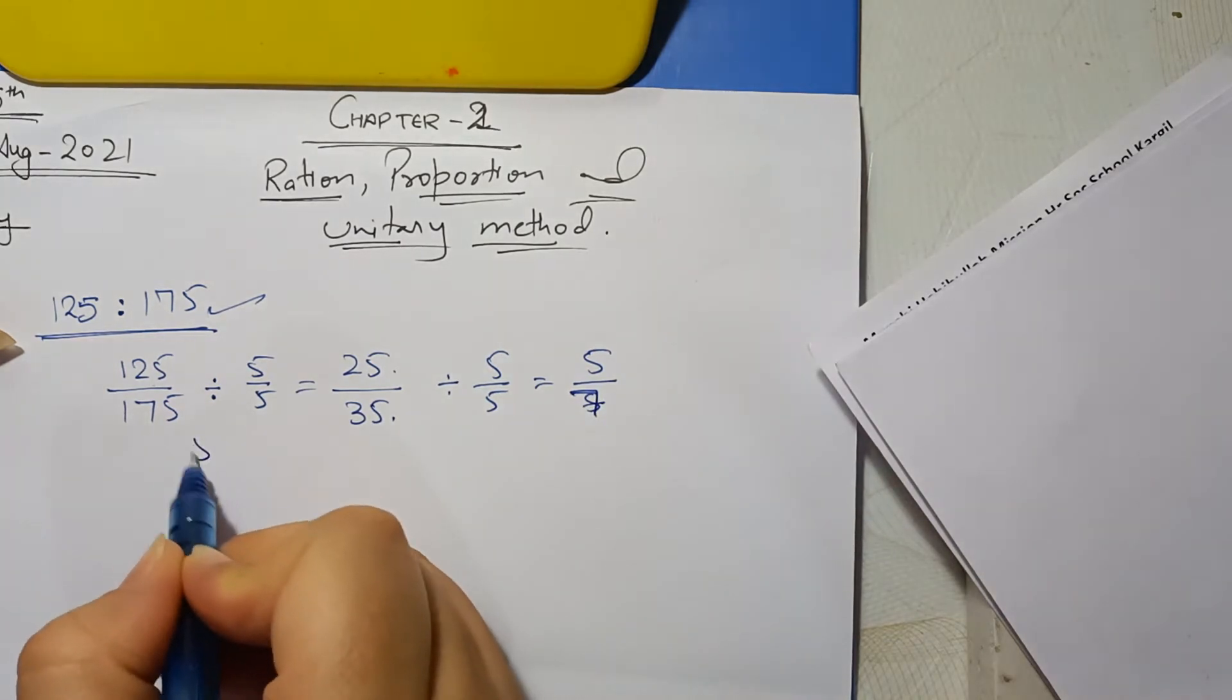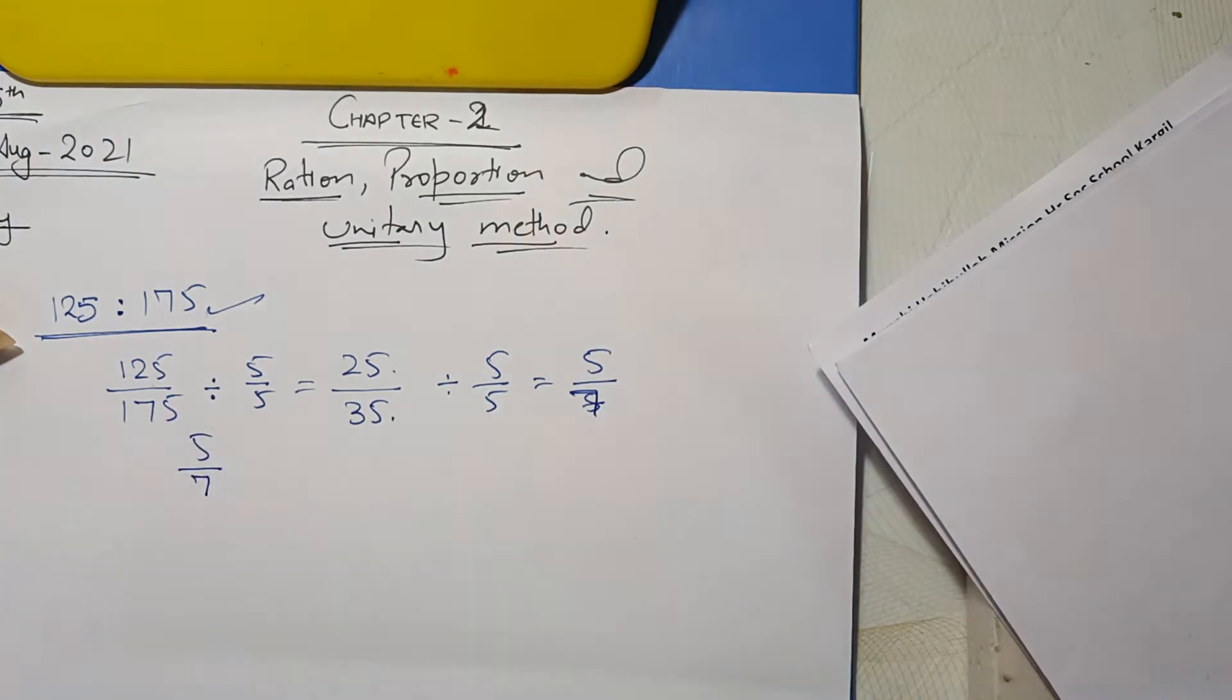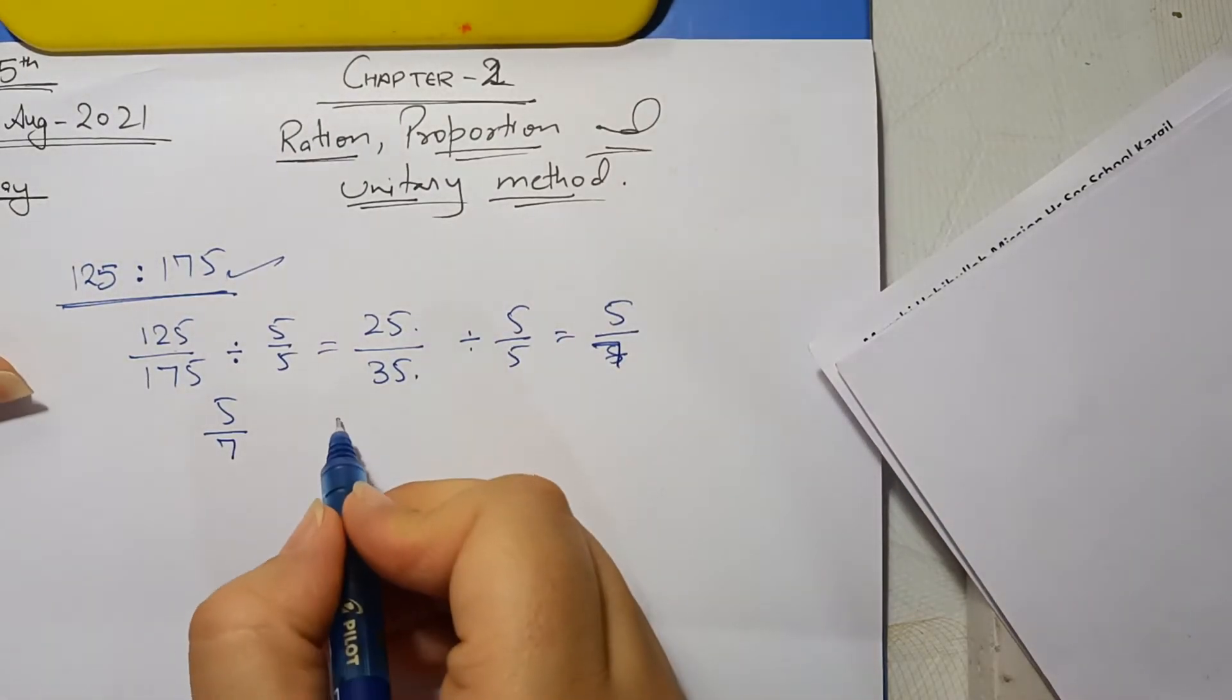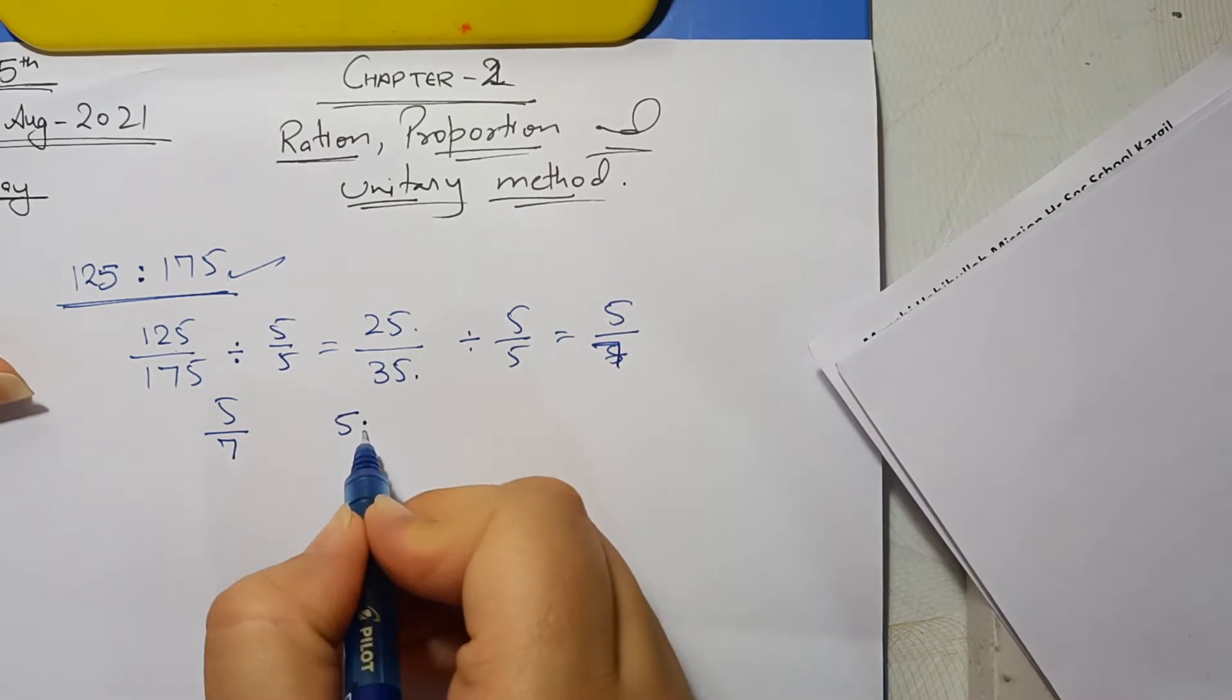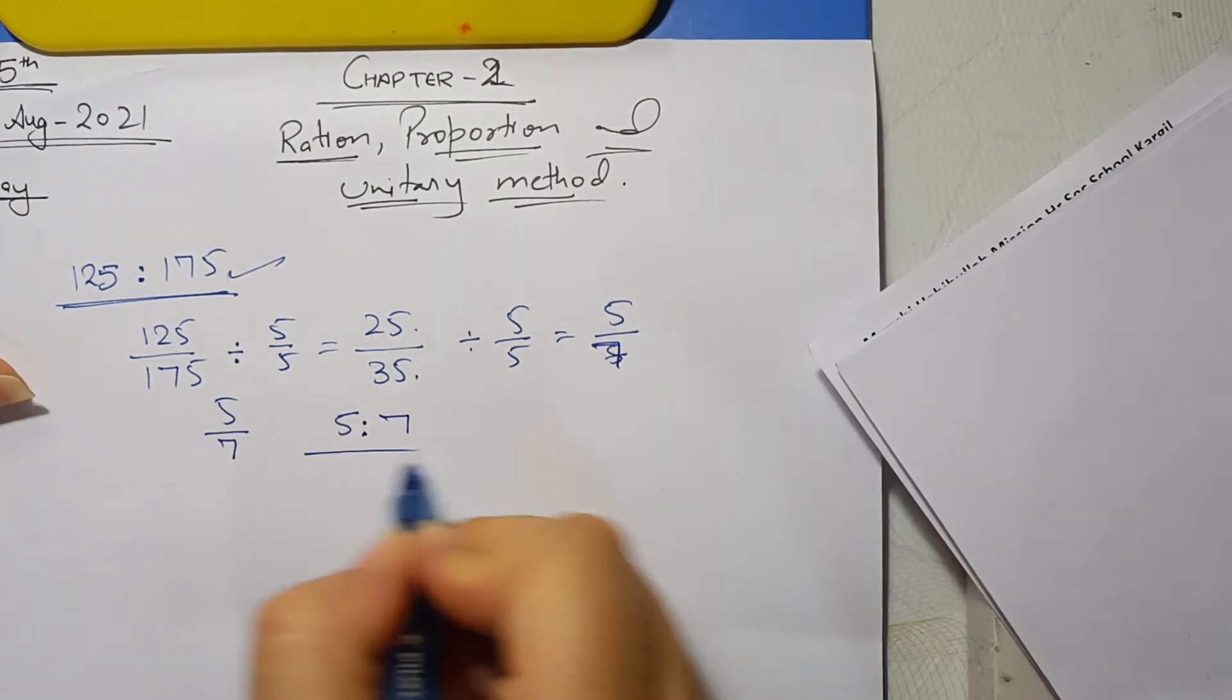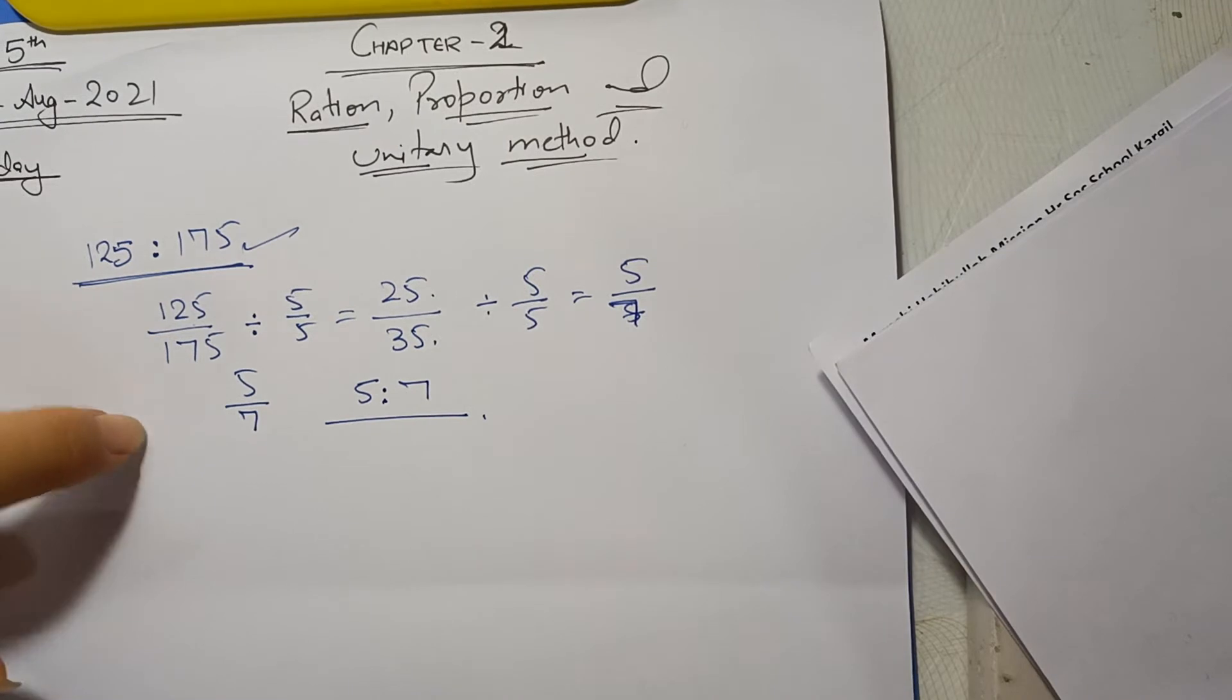So 5 upon 7 is our simplest form, so we can write it in this way, 5 is to 7. This is our simplest form.